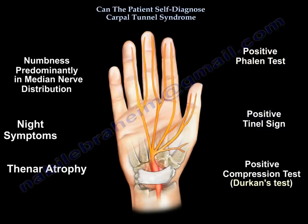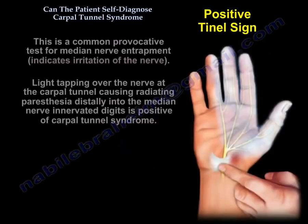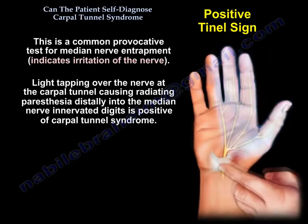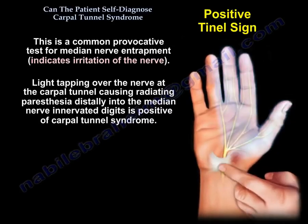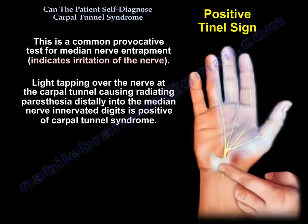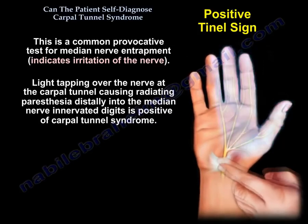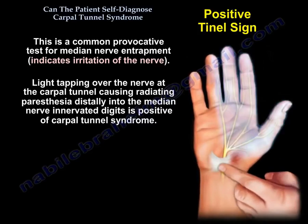A positive Tinel sign means irritation of the nerve. It is a common provocative test, and when positive, it indicates nerve irritation. Light tapping over the nerve at the carpal tunnel will cause radiating paresthesia distally into the median nerve innervated digits, meaning the test is positive for carpal tunnel syndrome.